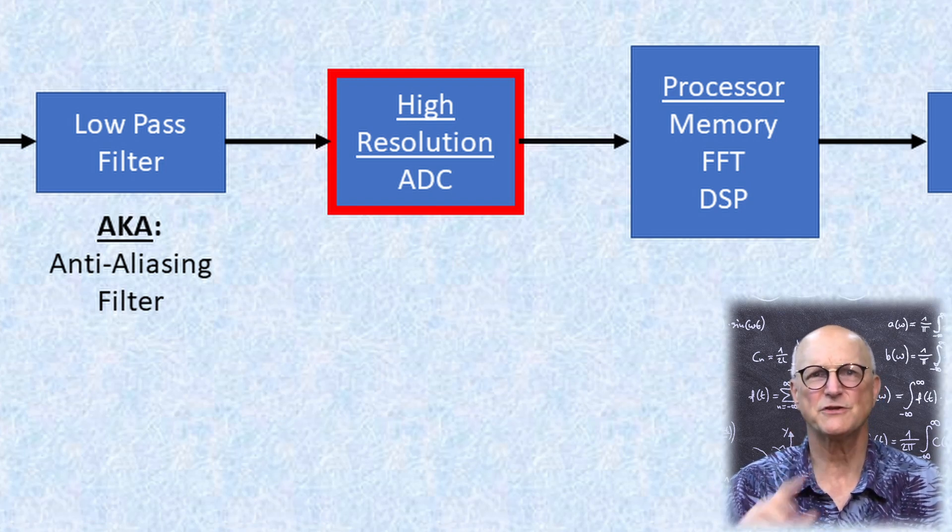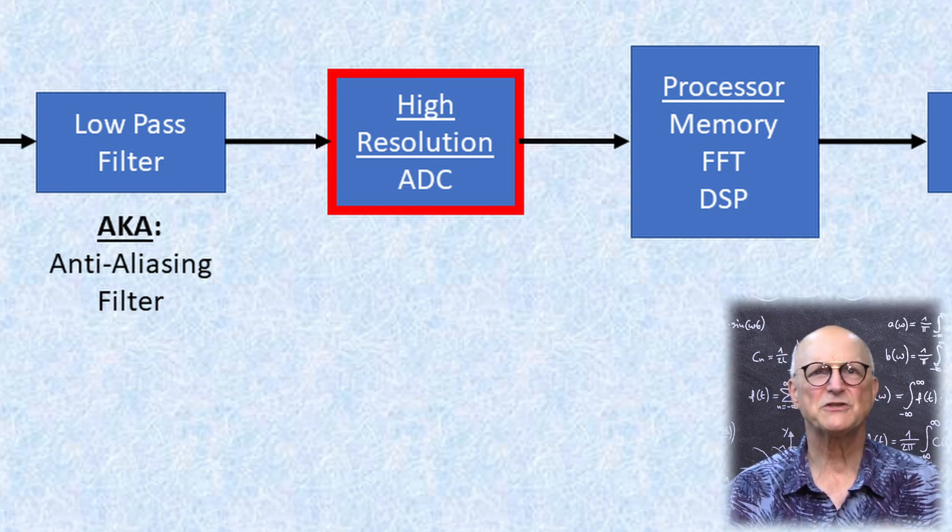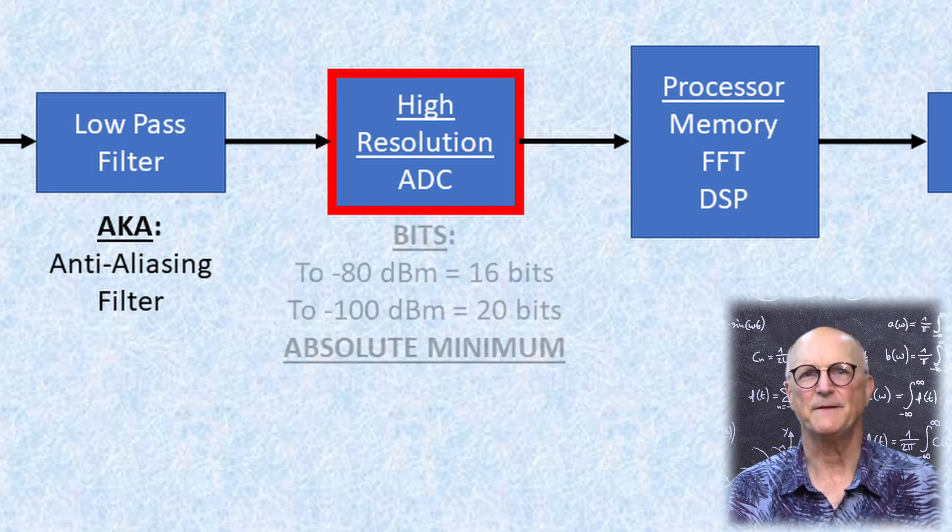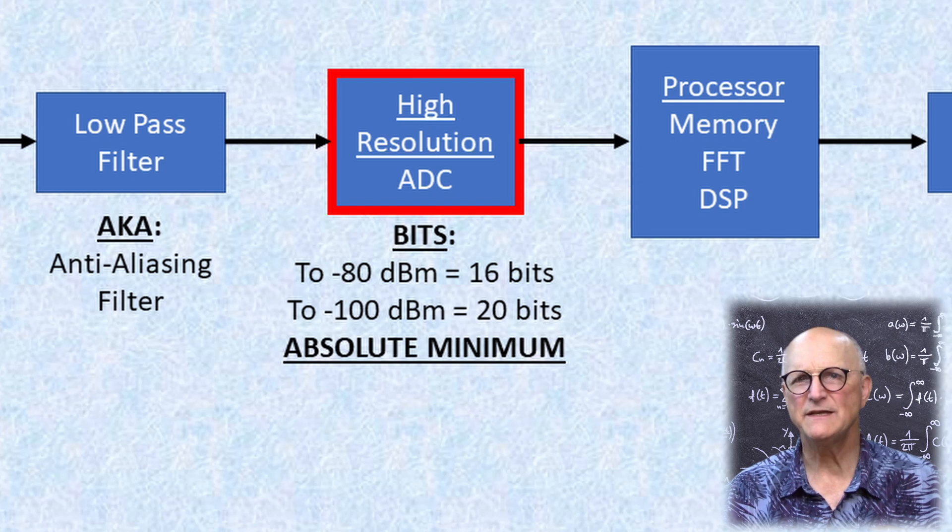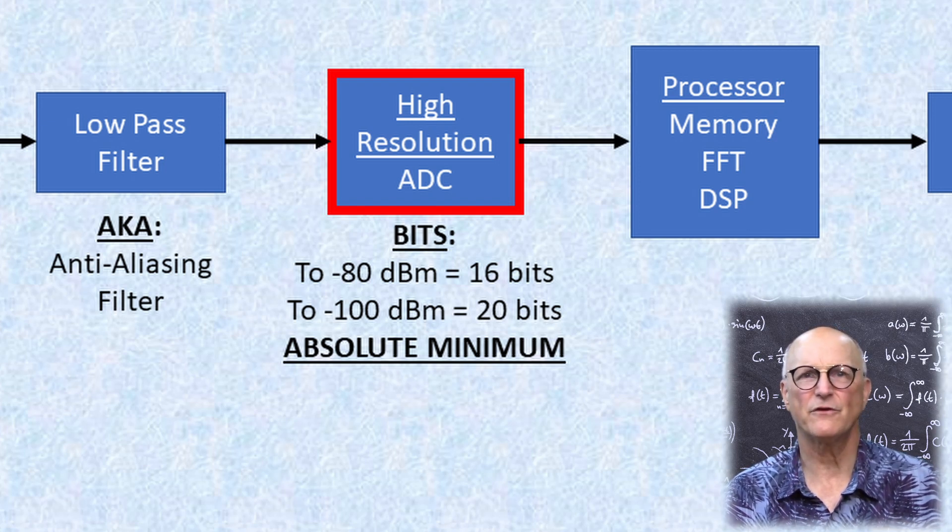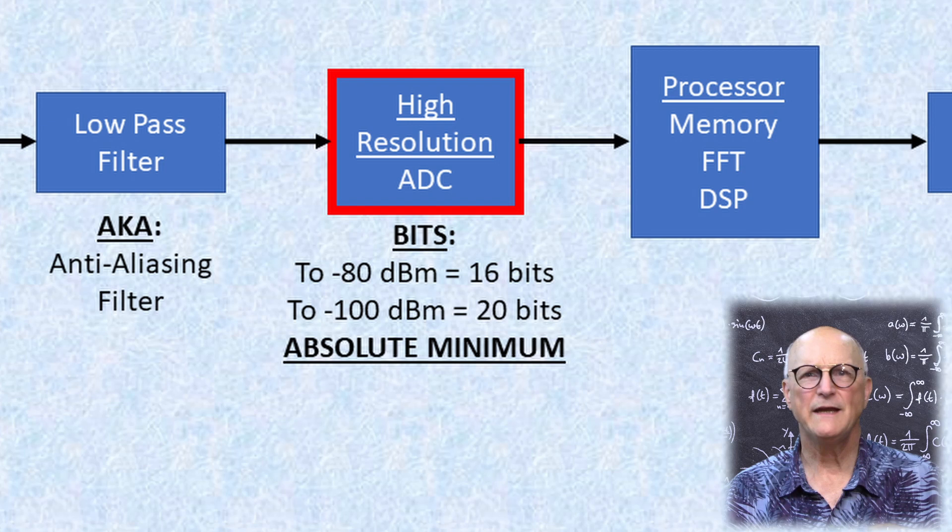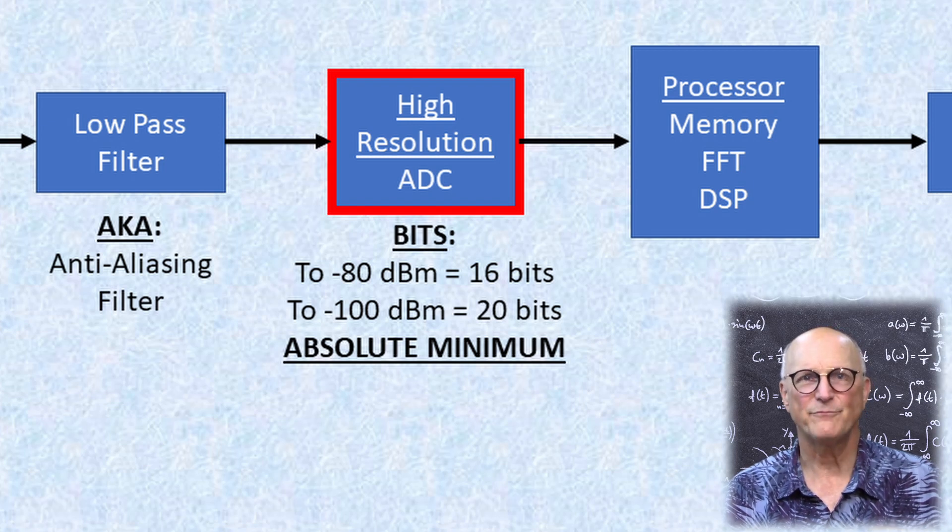But there's a hard brick wall of reality that faces us with the Fourier analysis spectrum analyzer, and it has to do with the analog-to-digital converter. So let's talk bits in our ADC. If we want a reliable and reasonably accurate idea of the amplitude of a signal for a given sample, we need an ADC with a lot of bits.